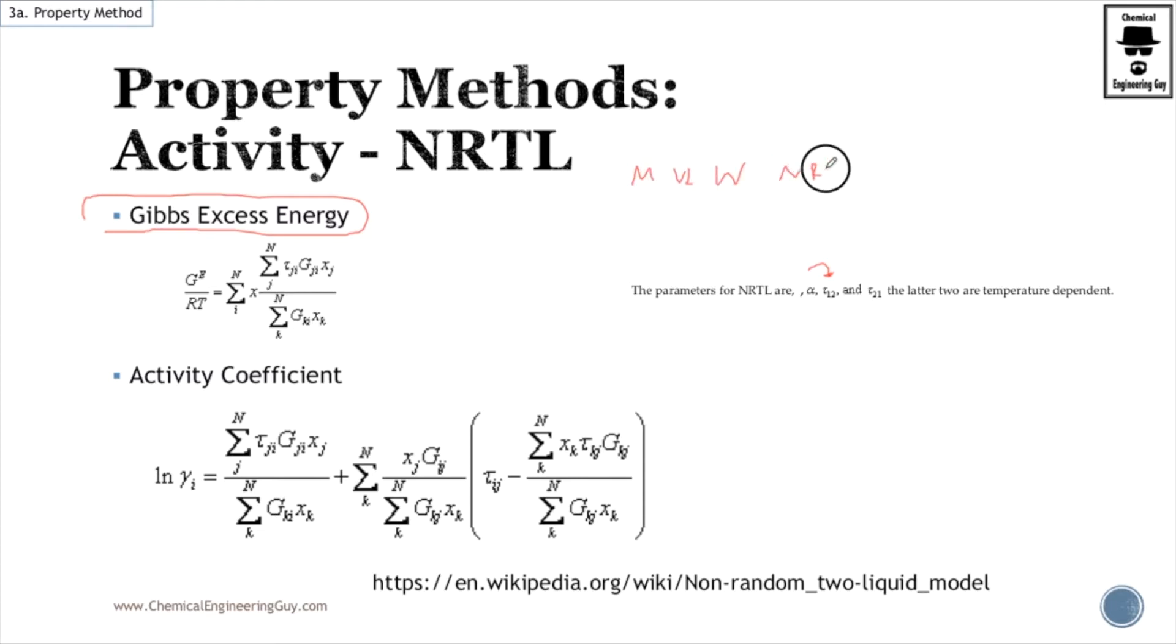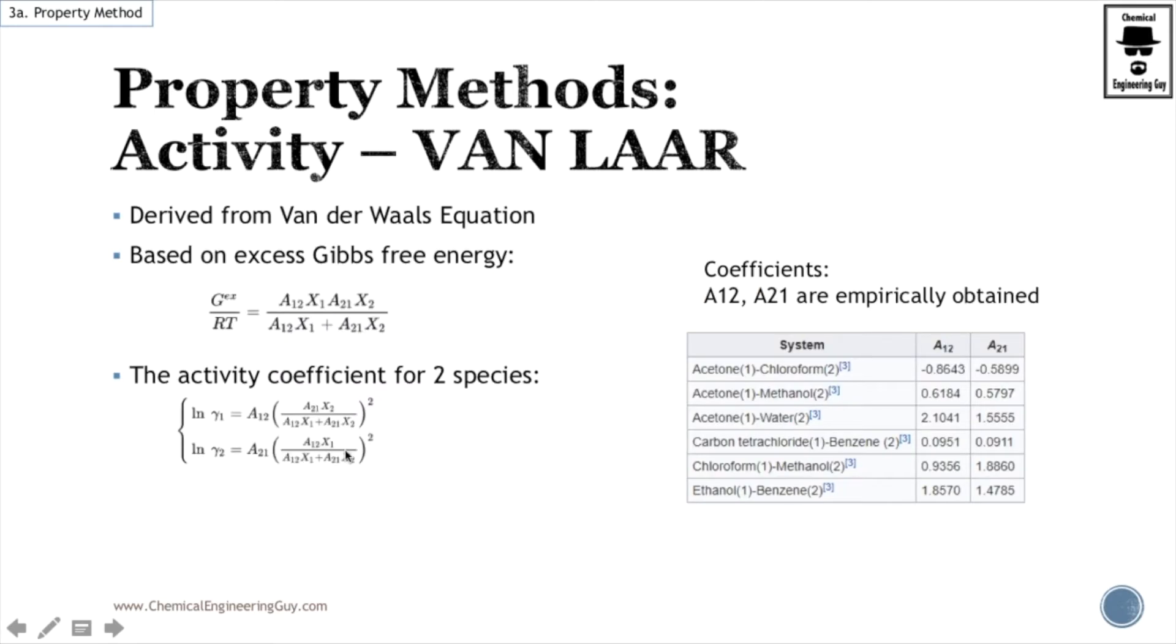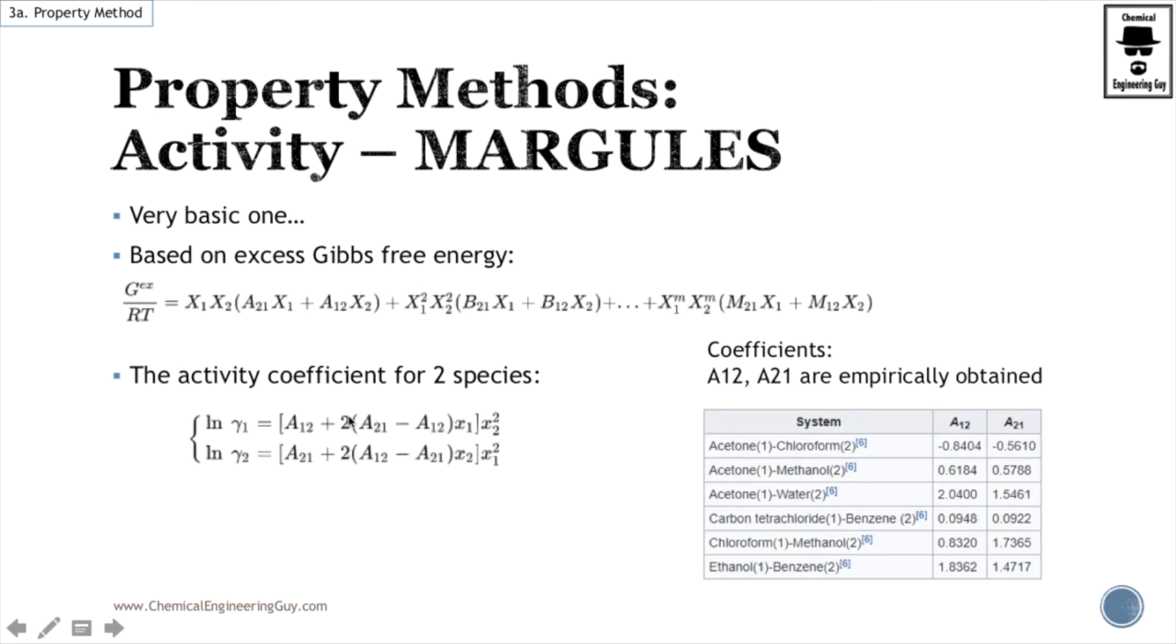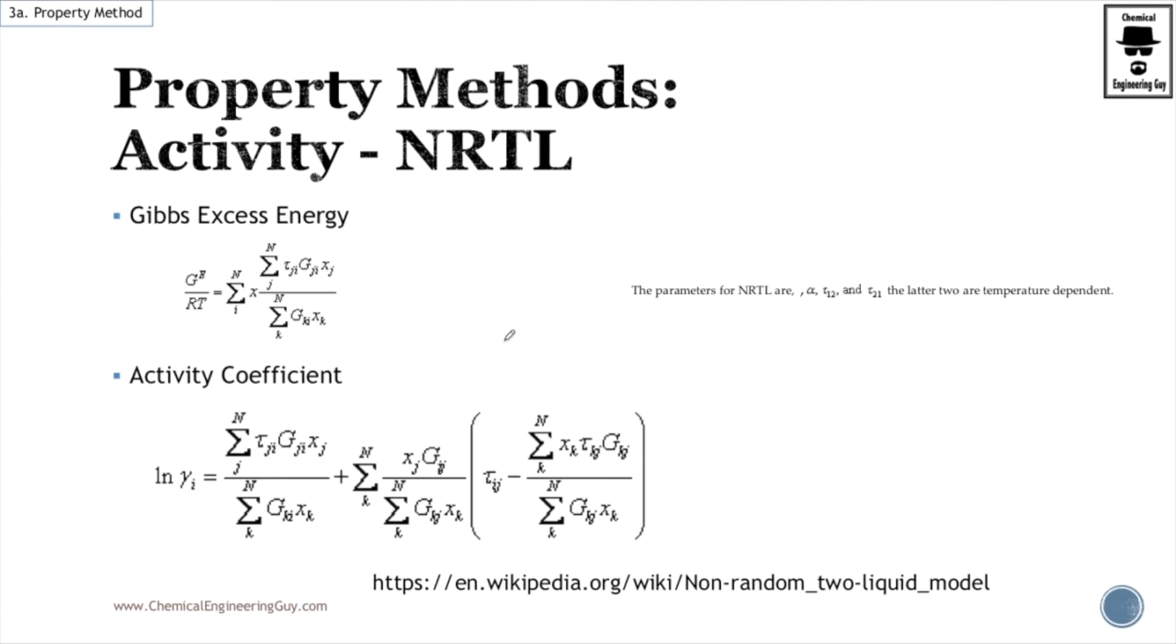So now we are in NRTL, which is one of the fanciest ones based on Gibbs excess energy. You can see now that we have a product of three variables. Previously we only had products of two variables. Right now we have a product of three variables, and that's better because it actually models better the interaction between species.